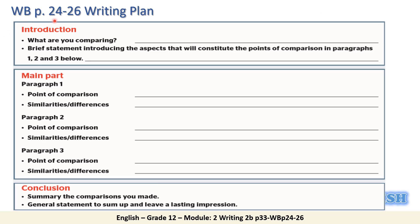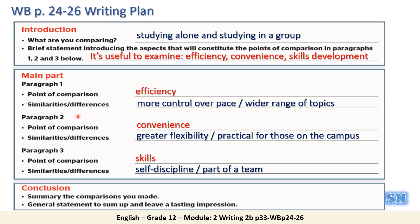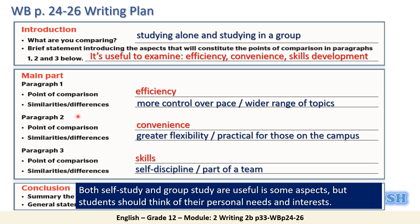If you open your workbook on page 24, you will find the writing plan. In the writing plan, we write briefly what we are going to develop in detail in the essay itself. In the introduction, we write what we are going to compare — studying alone versus studying in a group. Then we write the main aspects of comparison: efficiency, convenience, and skills development. We write short notes on similarities and differences, and in the conclusion a short summary and a general statement.